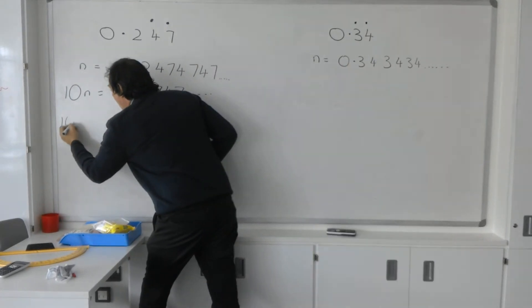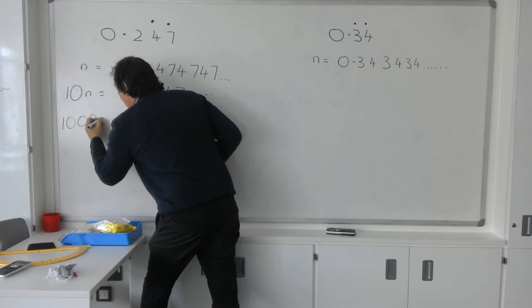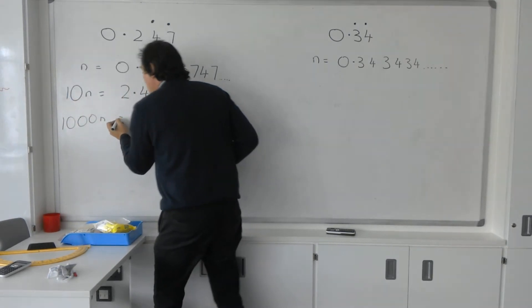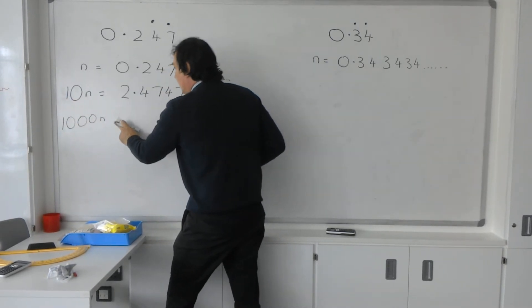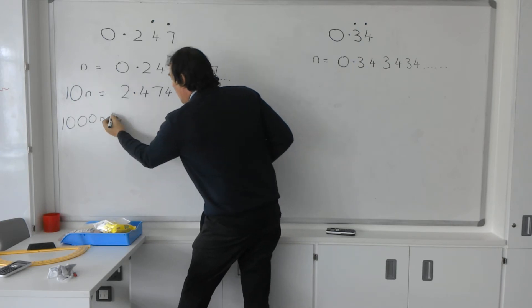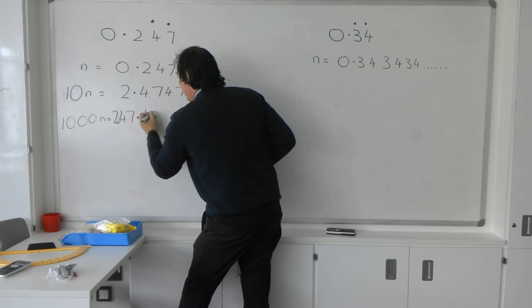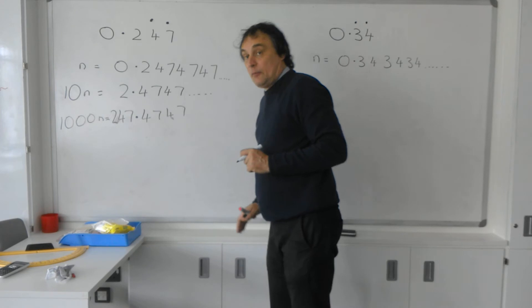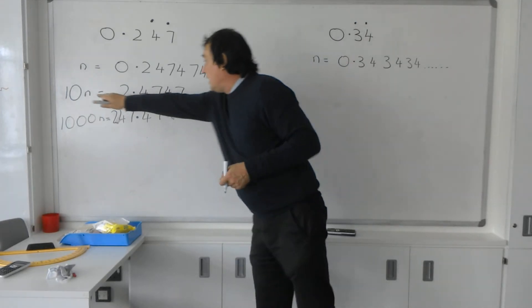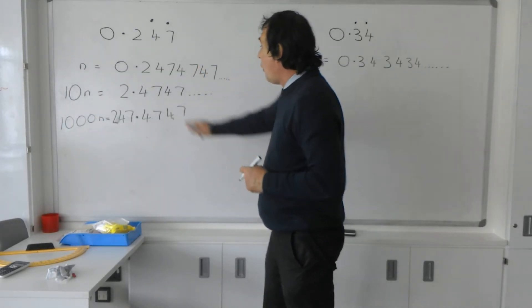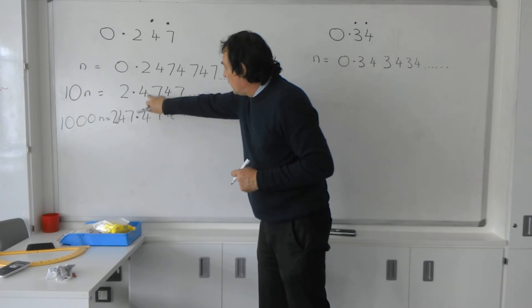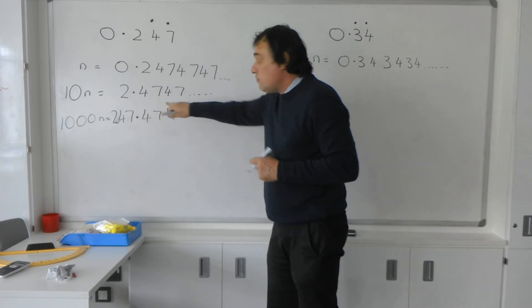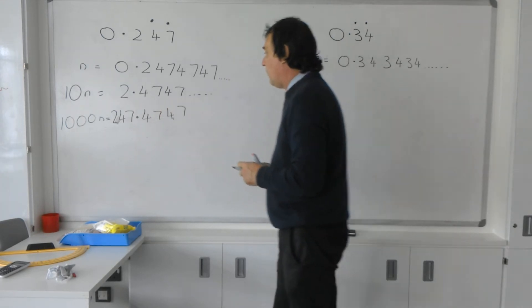We're going to have 1,000N. In other words, that times 10 by 1,000. I can move the decimal point along twice, and that's going to equal 247.4747. So now I've got two raised powers of 10, the 10 and the 1,000, where that recurring sequence 4, 7 is starting immediately after the decimal point.